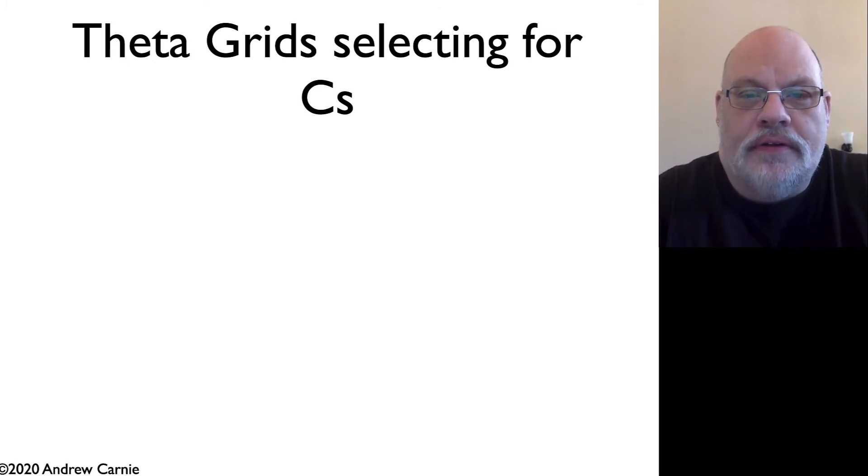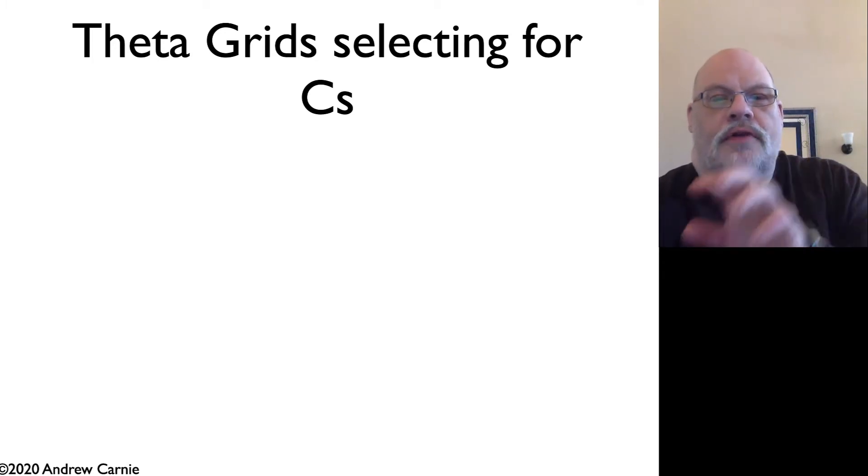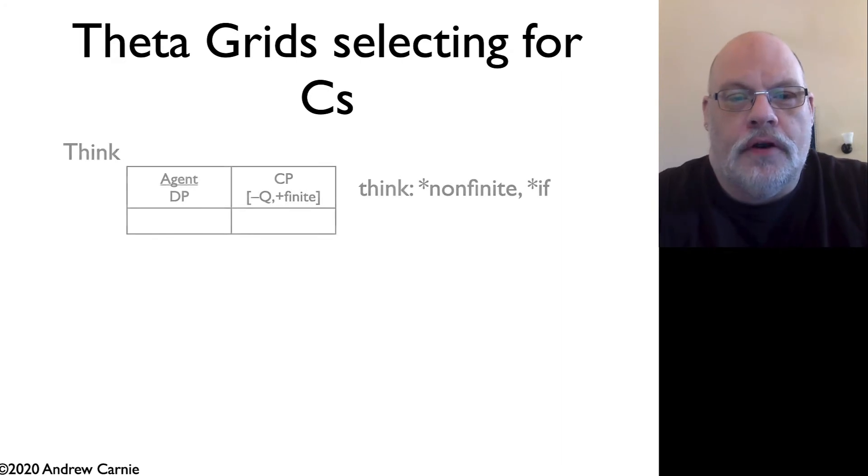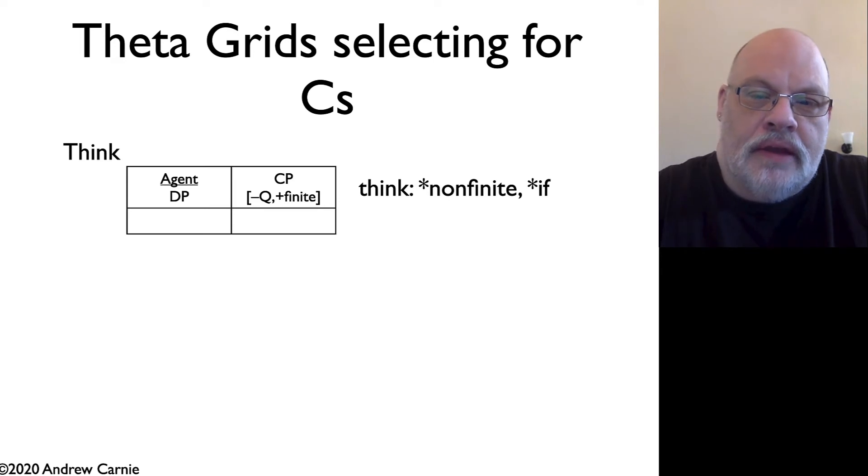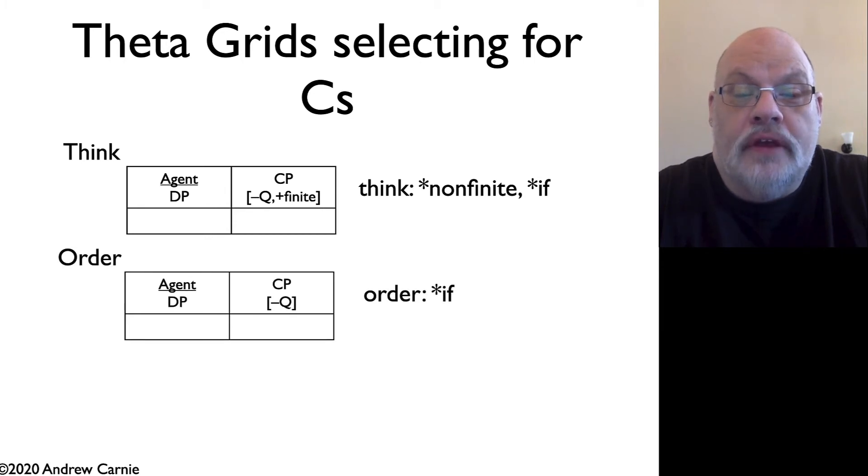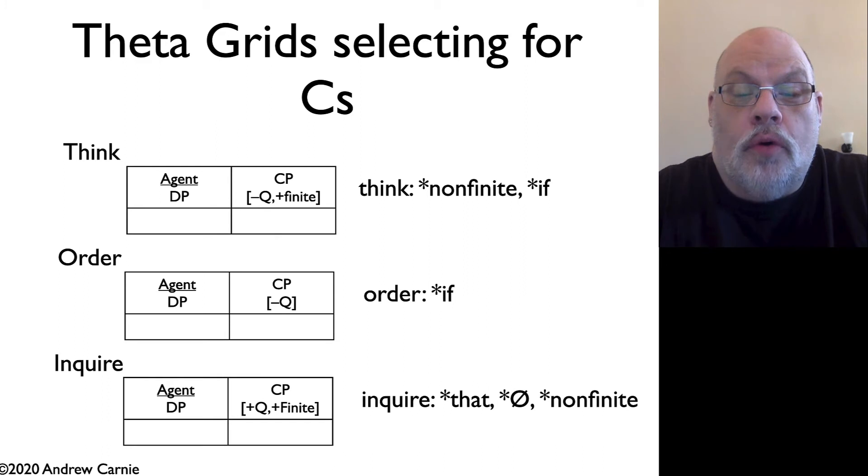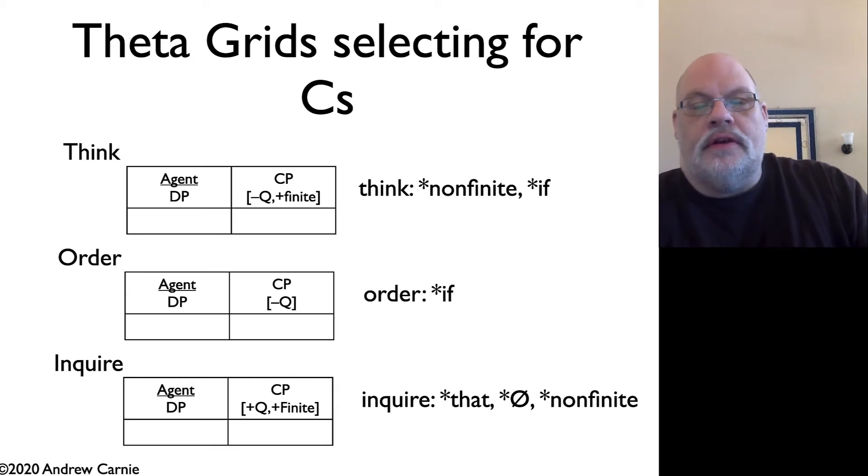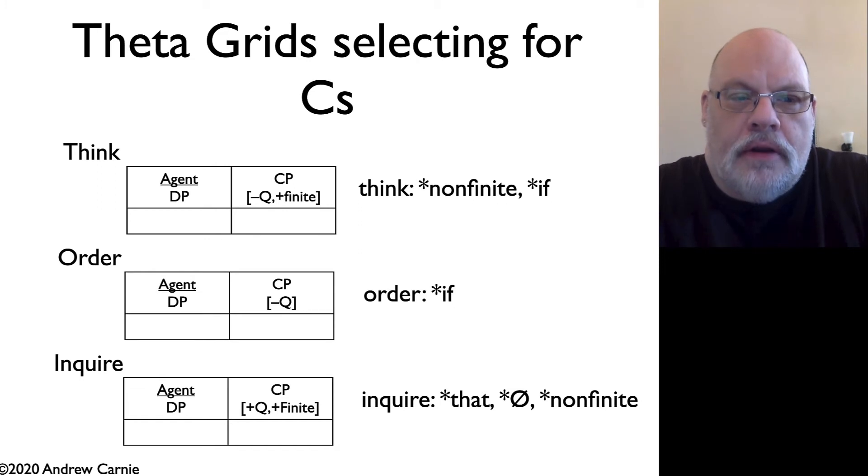All right, so now let's come back to those verbs and look at how we can use these features to account for which kinds of complement clauses, or CPs, can appear with which kind of verb. So the verb THINK requires an agent, or maybe an experiencer, and an embedded clause that is a CP that can't be a question and must be finite. We can contrast this with ORDER, which simply requires you can't have a question. And then finally, we have INQUIRE. INQUIRE requires that it be a question. Now, you'll notice I also put in the feature plus finite. That's maybe not necessary because plus Q implies finiteness. But just for completeness sake, I put in the plus finite. So these three theta grids get at that distribution of clause types that appear underneath these different verbs.